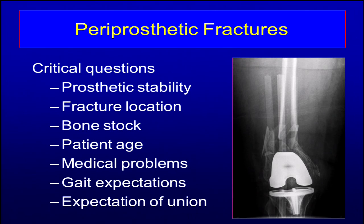There are a number of critical questions you need to ask yourself based on your examination of the patient and the images. Number one, is the prosthesis stable? Where's the fracture located? What is the bone stock, mostly distally, because you're going to get plenty of bone stock proximally in most cases. What's the patient's physiologic age and their ability to endure a big operation? Do they have significant medical comorbidities? Do you expect this patient to walk? Do you think they will be able to control their amount of protected weight bearing? And what is the expectation for union? There are a lot of questions here that are different than you would see with a standard fracture or a fracture in a young patient.